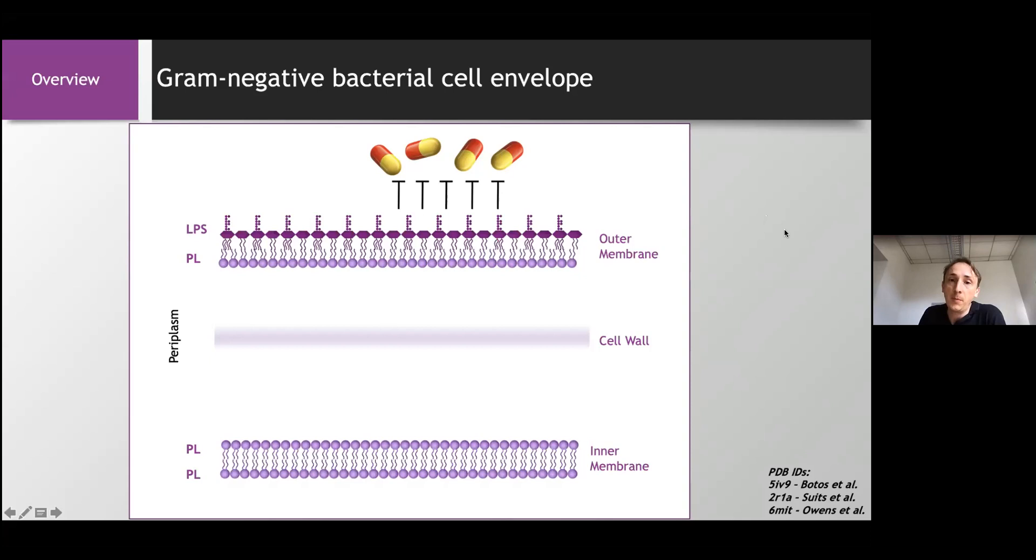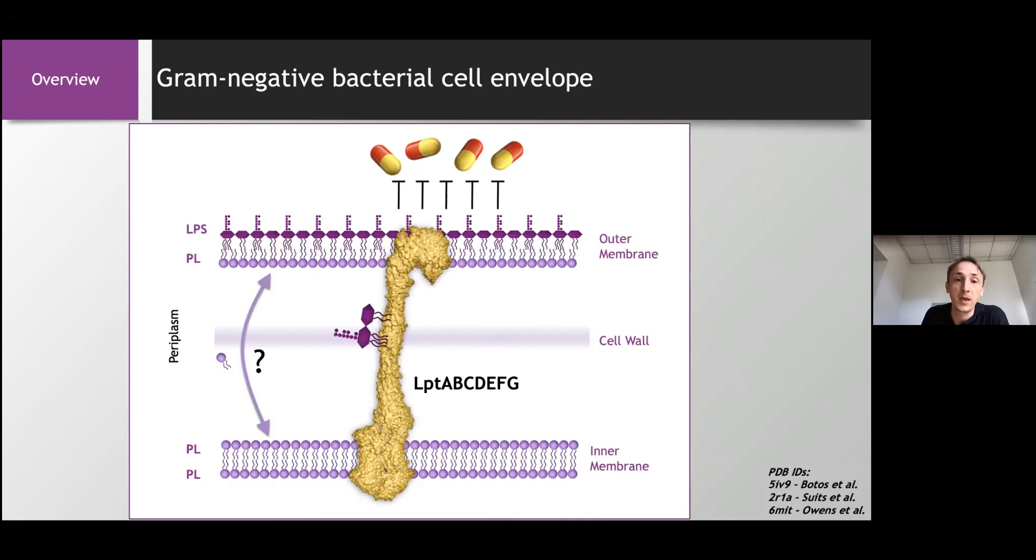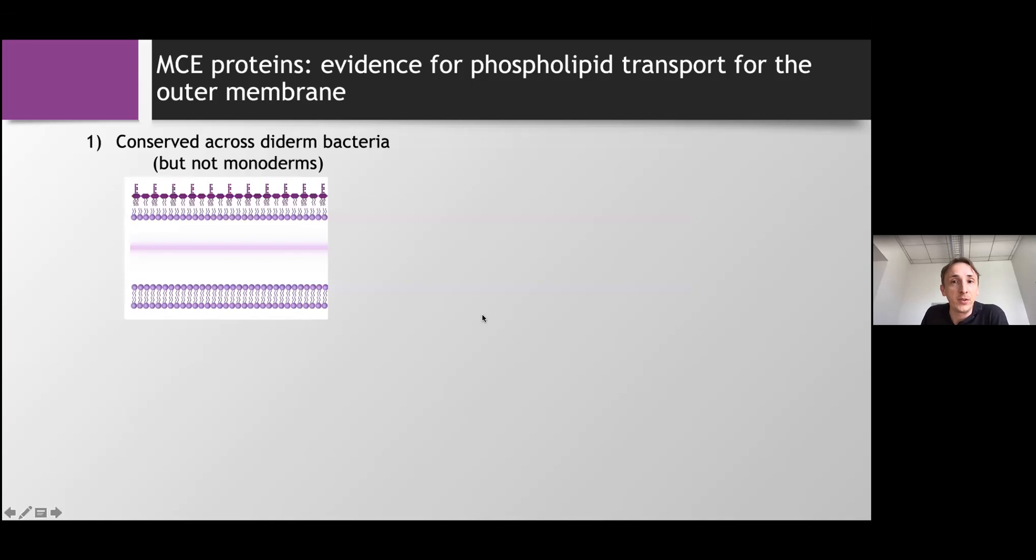So how the LPS are transported has been pretty well studied and it's achieved by the LPT transporter and the LPS basically move into the bridge formed by the LPTA proteins. However, for the phospholipids, it's comparatively less studied and it's still quite unknown how the phospholipids compared to the LPS are transported through the periplasm.